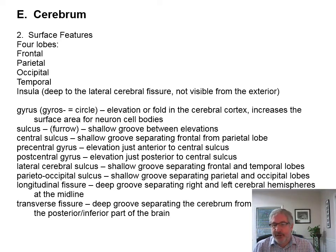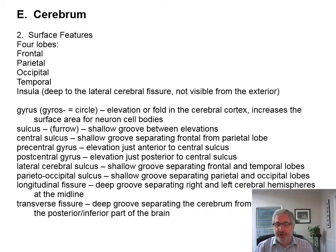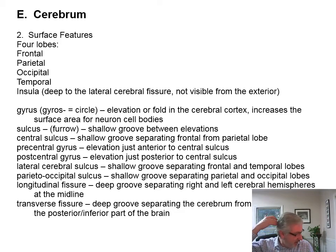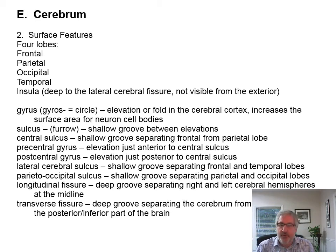The parieto-occipital sulcus separates the parietal and occipital lobes. And then there's the longitudinal fissure, which is a deep groove right down the middle of the brain. There's also the transverse fissure, which is the deep groove that separates the cerebellum from the rest of the brain.